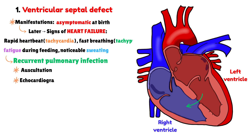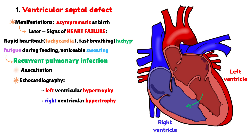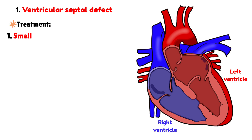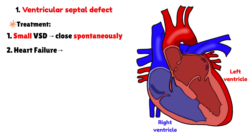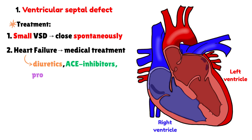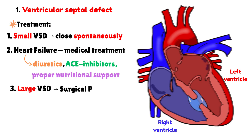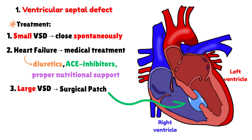On echocardiography, we can observe left ventricular hypertrophy, and in larger defects, even right ventricular hypertrophy may be visible as well. Looking at the treatment options, small ventricular septal defects often close spontaneously within the first few years of life. However, when signs of heart failure appear, medical treatment should be initiated, typically including diuretics, angiotensin-converting enzyme inhibitors, and proper nutritional support. In cases where the defect is large and does not close on its own, surgical correction becomes necessary, usually performed by closing the defect with a patch.